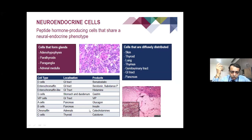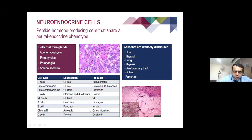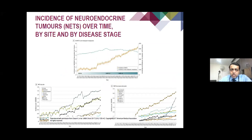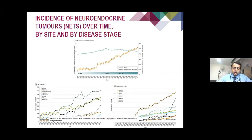Sometimes these are called neuroendocrine tumours, but mostly they are non-secretory cells not associated with any syndrome. Today we will discuss the GI tract and include the pancreas — how to diagnose and treat them. Neuroendocrine tumours may have somatostatin receptors and may secrete hormones. Slow-growing tumours can be treated with more than one option. The incidence seems to be rising, and most experts feel this is not only due to improved diagnostics — there is definitely something more to it.